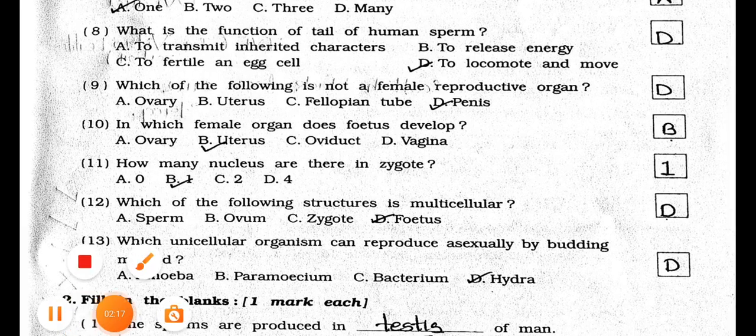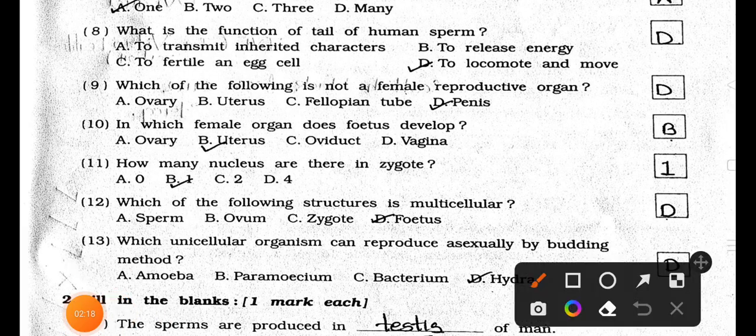Number 9. Which of the following is not a female reproductive organ? A. Ovary, B. Uterus, C. Fallopian tube, and D. Penis. Answer is Option D, Penis.